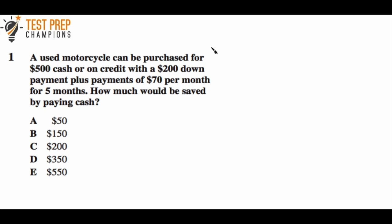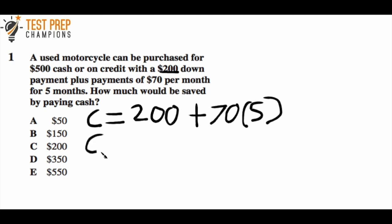Let's go over this. First, we need to calculate how much it would cost to pay by credit, then find the difference between credit versus cash. We're told there's a $200 down payment. To find the credit cost, the equation would be $200 plus $70 per month. Since it's five months, we multiply 70 times 5. In the order of operations, we always do multiplication before addition. So 70 times 5 gives me 350. Then 200 plus 350 gives us 550.